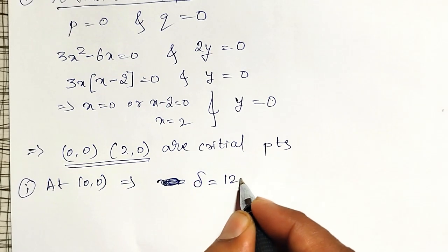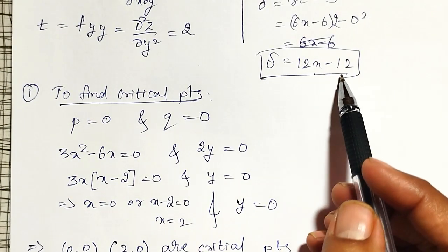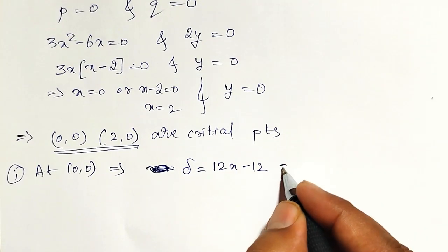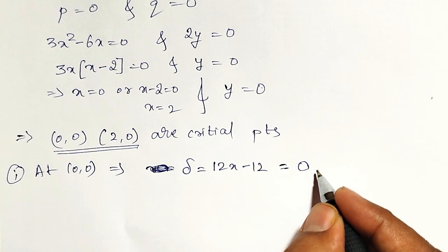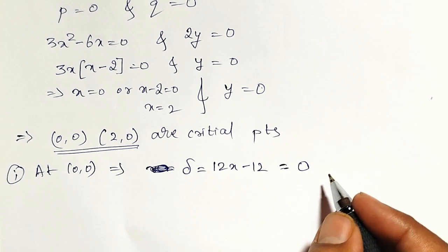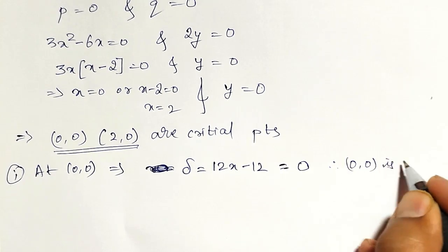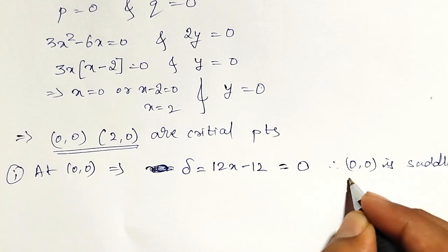Delta equal to. What I am having delta equal to? 12x minus 12. You can check here. 12x minus 12 is my delta. At x equal to 0, delta will become 0. Which is equal to 0. Therefore, 0, 0 is saddle point.